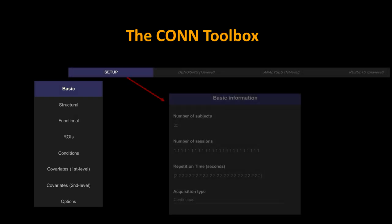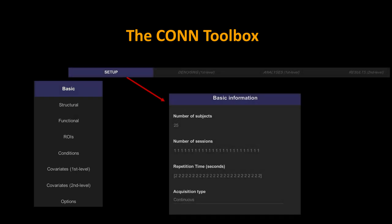The basic layout of CONN is pretty simple. Along the top ribbon you'll see different tabs: Setup, Denoising, Analyses, and Results. Within each of those you have a different menu on the left-hand side. Setup is where you enter all your basic information about repetition time, sessions, number of subjects, continuous versus sparse, and so on.